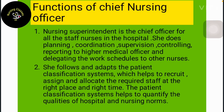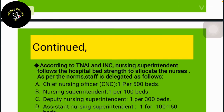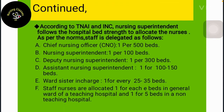The CNO follows and adapts the patient classification system, which helps to ascertain and allocate the required staff at the right place and right time. This system helps to qualify the quality of hospital and nursing care. According to INC norms, nursing staff is allocated as follows: CNO — one per 500 beds; Nursing Superintendent — one per 100 beds; Deputy Nursing Superintendent — one per 300 beds; Assistant Nursing Superintendent — one per 100–150 beds; Ward In-charge — one per every 25–35 beds.